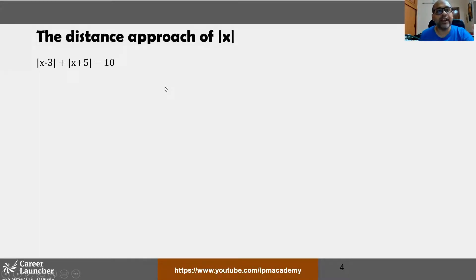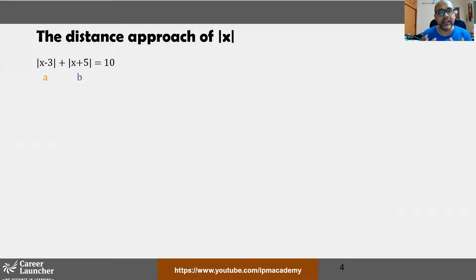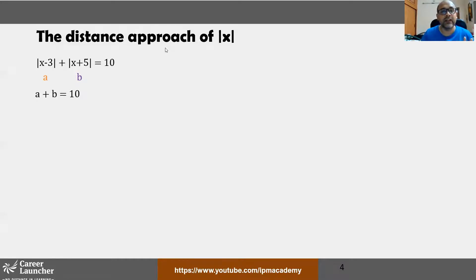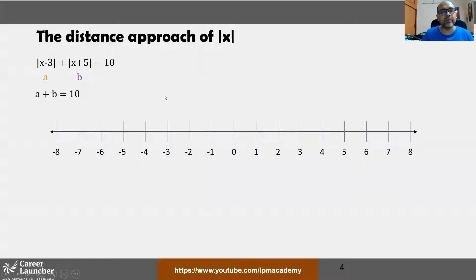Let's take a look at the first example. We have the equation |x - 3| + |x + 5| = 10. We will only use the distance definition of modulus here. Let's call the first modulus value 'a' and the second modulus value 'b'. Since both are modulus values, a and b are non-negative, and a + b = 10.